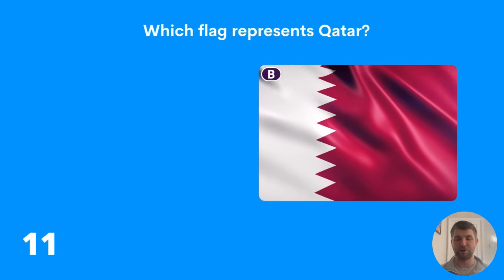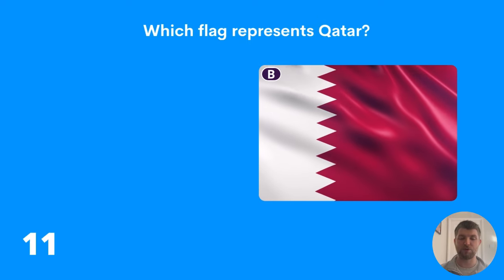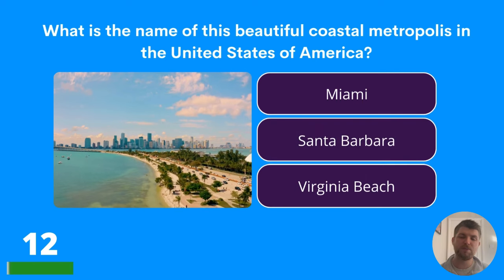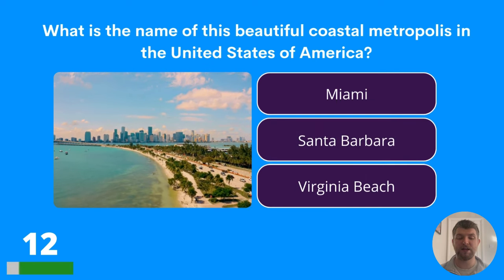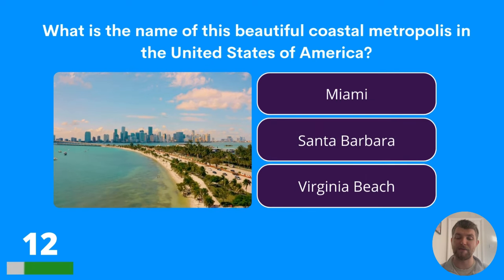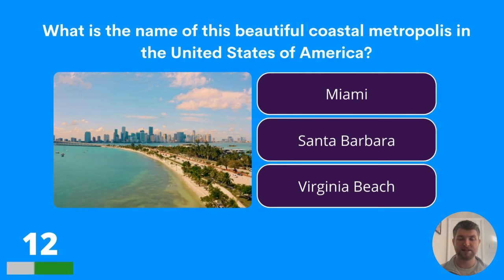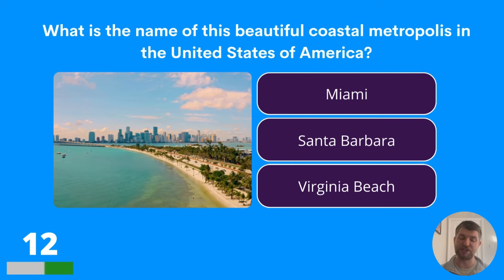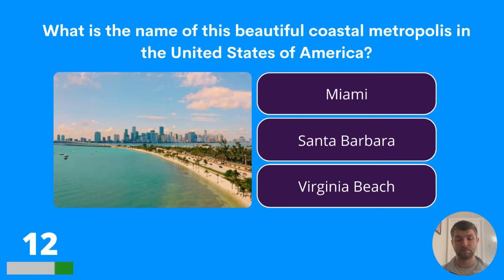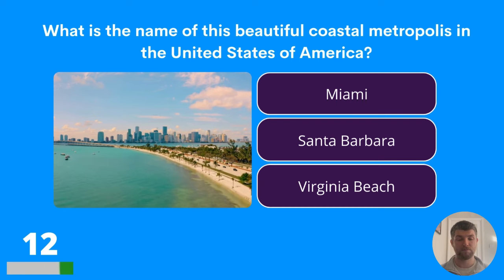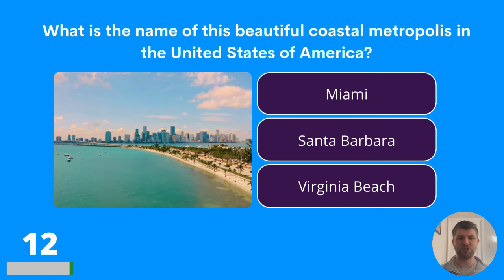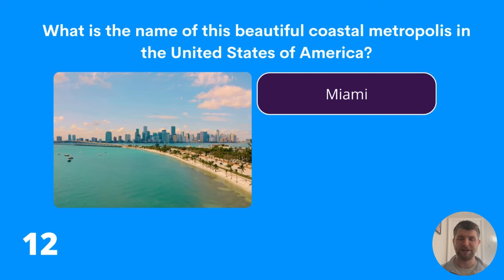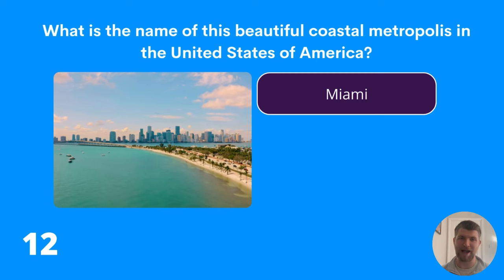Moving on to question twelve: what is the name of this beautiful coastal metropolis in the United States of America? Is it Miami, Santa Barbara, or Virginia Beach? The answer is Miami.